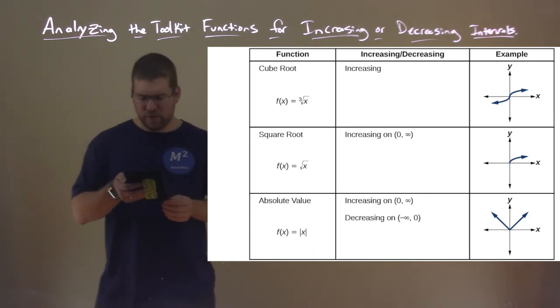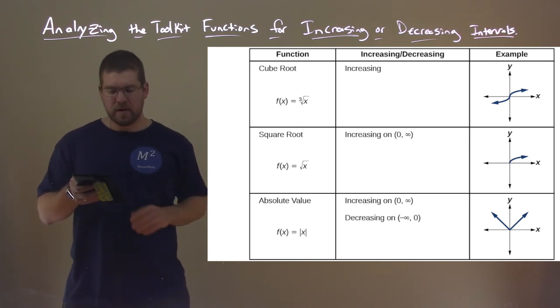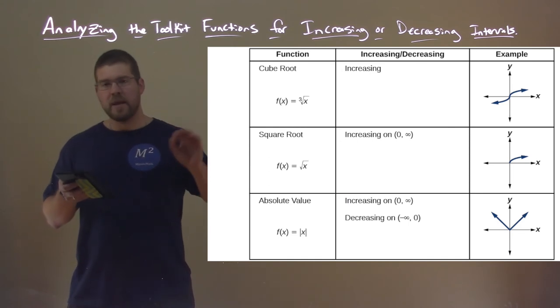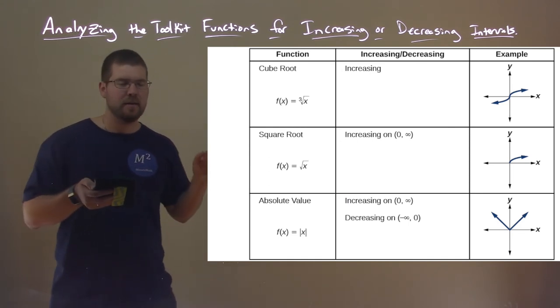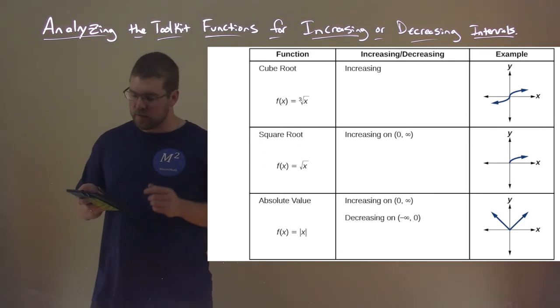The absolute value function here, f(x) equals the absolute value of x, is increasing on the interval from zero to infinity, and is decreasing on the interval from negative infinity to zero. Again, notice at zero itself, it's neither increasing nor decreasing.